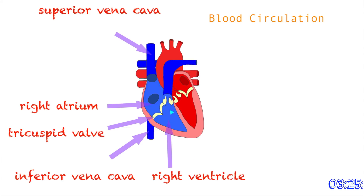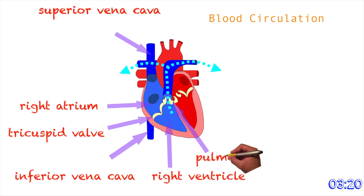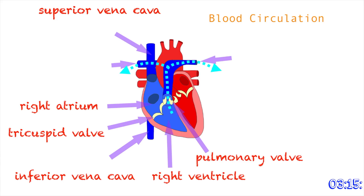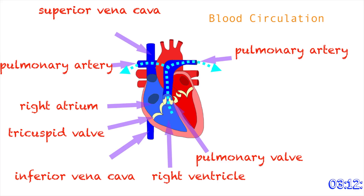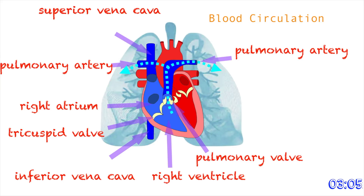From the right ventricle, the blood then goes outside of the heart, but first it would pass by this structure right here called the pulmonary valve. From the pulmonary valve, the blood passes by these two blood vessels right here called the pulmonary artery. By its name, it kind of gives away what body part the blood goes to next — pulmonary — yes, it goes to the lungs.